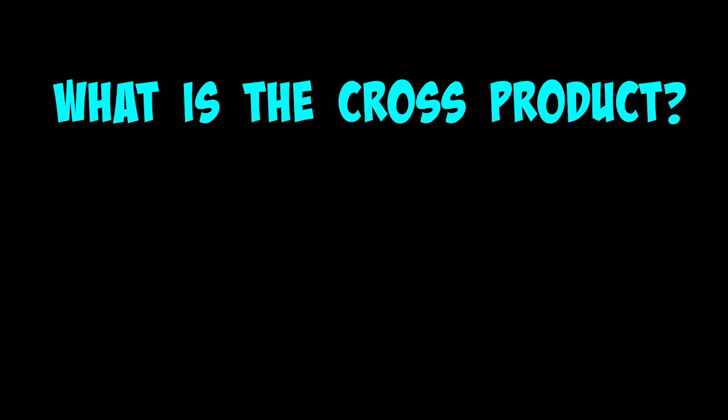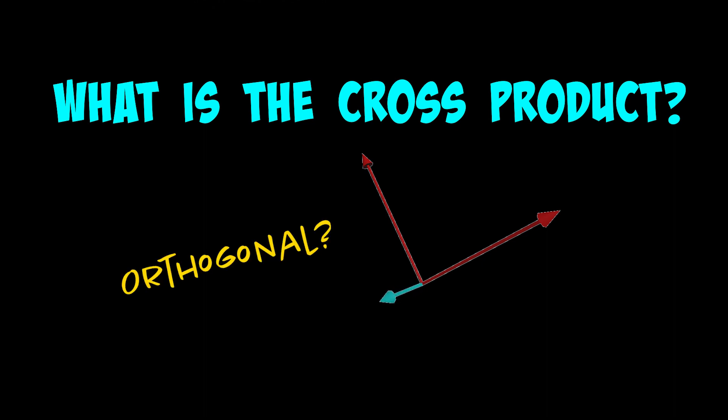What is a cross product? A cross product takes two vectors and returns a third vector that is orthogonal to the original first two vectors that you fed in at the beginning.